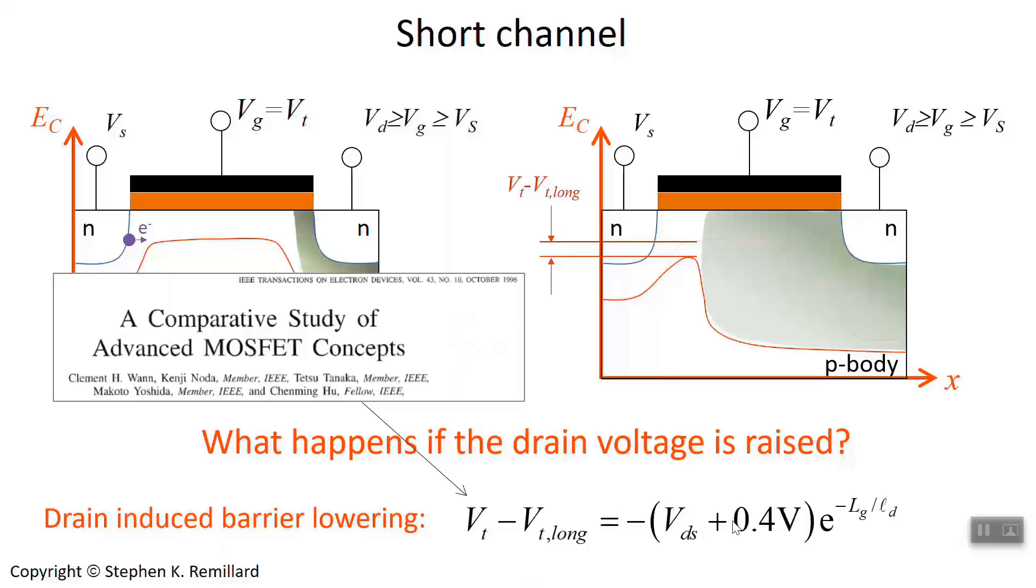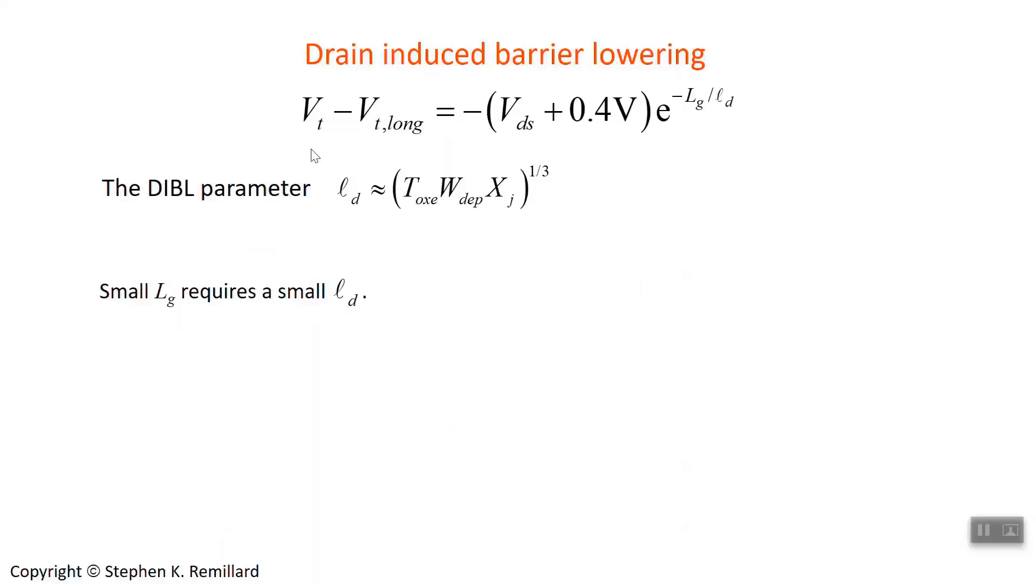This is the model for the threshold voltage in a short channel minus the threshold voltage in a long channel. If you've made the channel long, you'd have a certain threshold voltage. But as we get really short, it starts to go down. The shorter a channel gets, once it's below several hundred nanometers, the threshold voltage starts to become noticeably lower. If you inspect the expression, the difference becomes more pronounced with a really small gate. As this exponential becomes E to the 0, this term becomes non-negligible. If you have a really long gate, this is E to the minus big number, and the difference is zero.